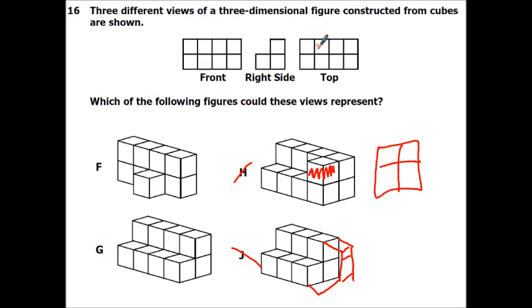And then our top view says we have to have two going across each way. So you've got two going each way. And then this one, if you were to draw that as a top view, it would look something like this. Alright, so that one doesn't work. So that means G is our answer.